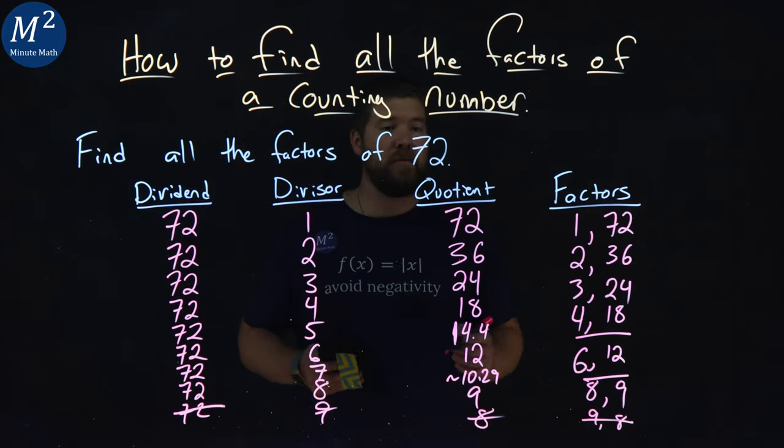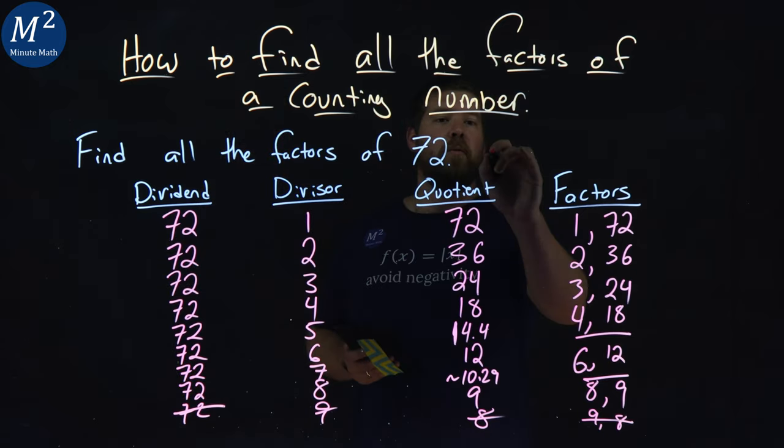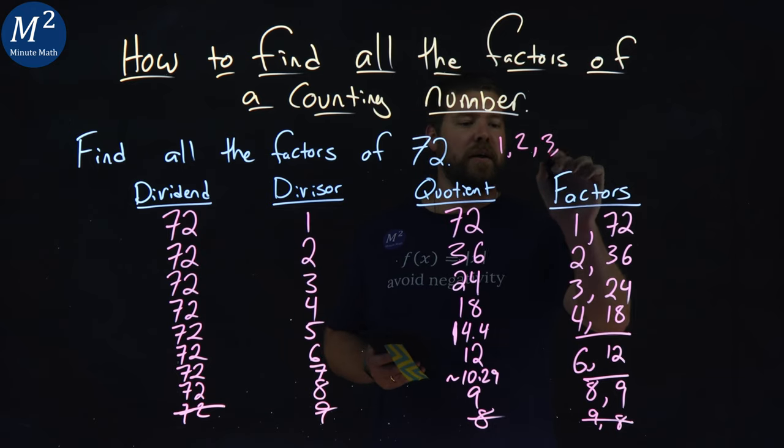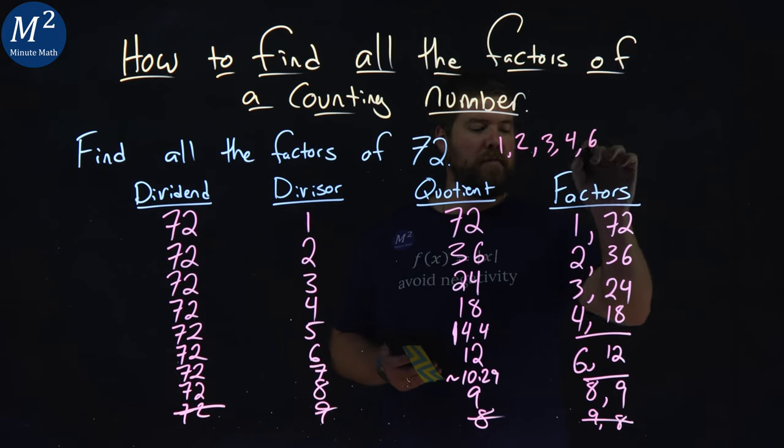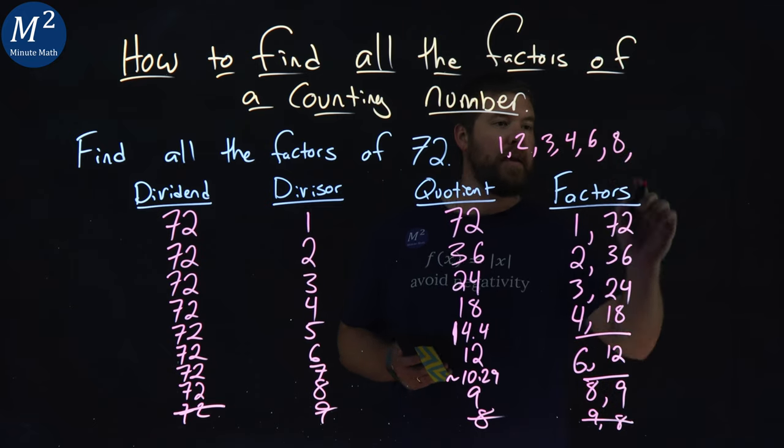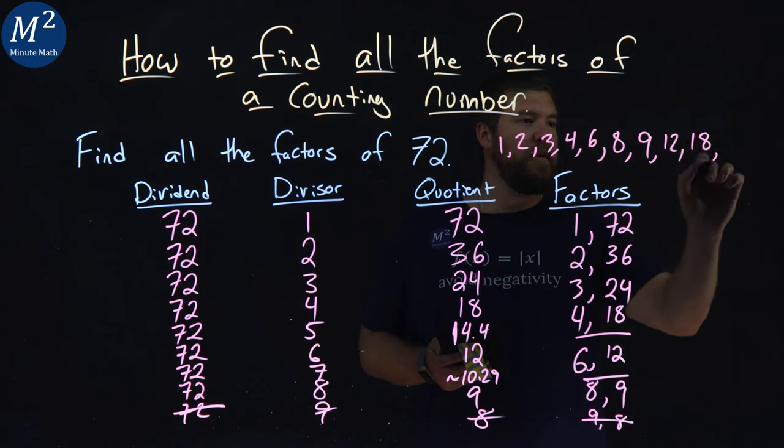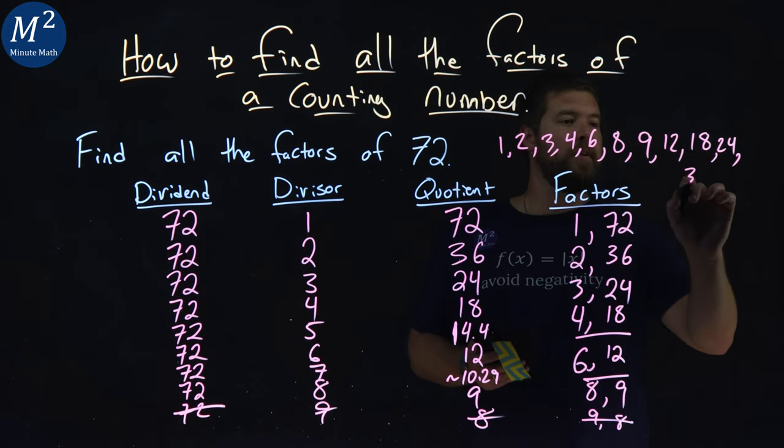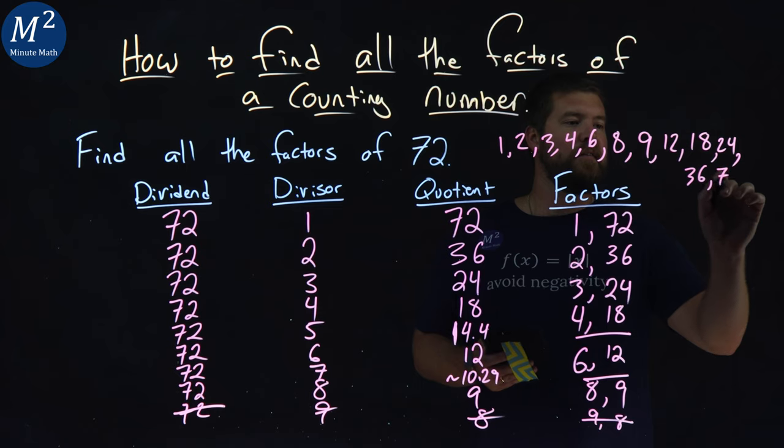So all the factors of 72, we've got to write down the numbers if we can. We have 1, 2. Ignore the repeats. 3, 4, 6, 8. So work your way down, then go up. 9, 12, 18, 24, 36, and 72.